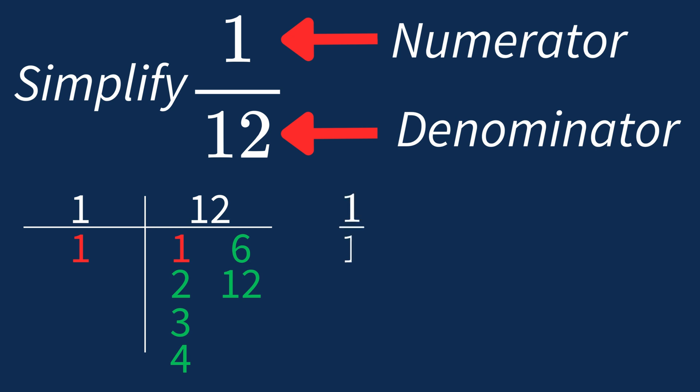Dividing the numerator 1 by 1 gives us 1. Dividing the denominator 12 by 1 leaves us with 12.